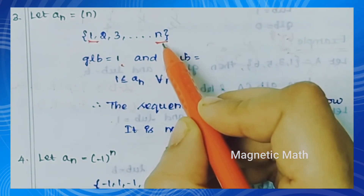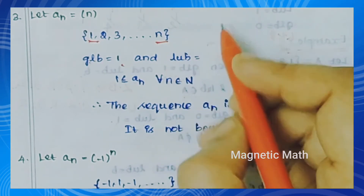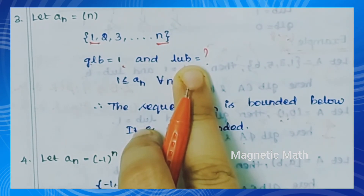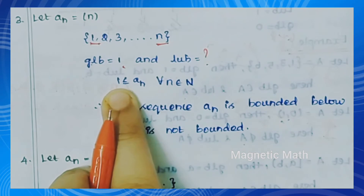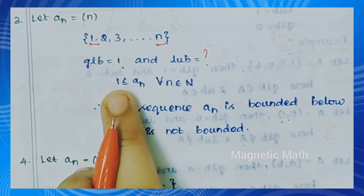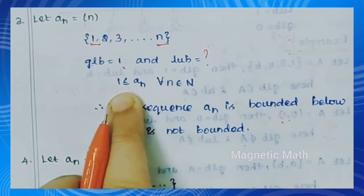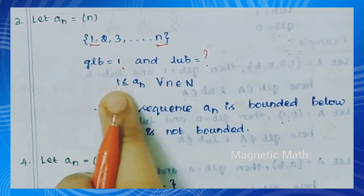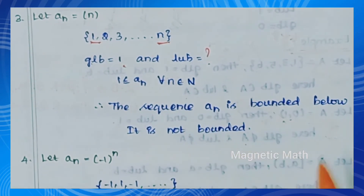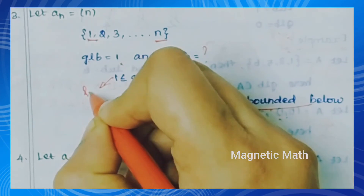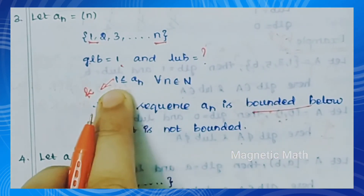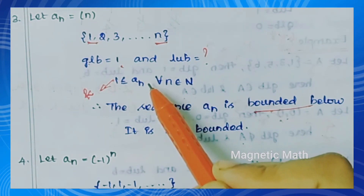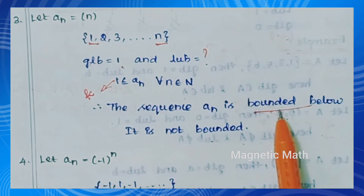There is one term in the sequence for all n belonging to ℕ. Therefore 1 is less than or equal to aₙ — the sequence is bounded below. That means small k — the lower bound exists. We don't have an upper bound that is finite, so it is not bounded above. It is not bounded, but it is bounded below. Bounded sequence it is not.